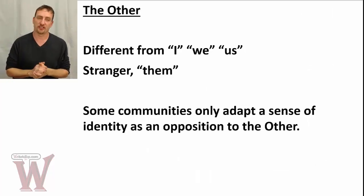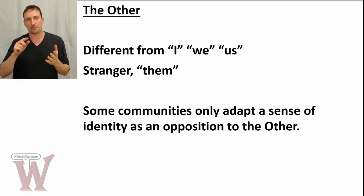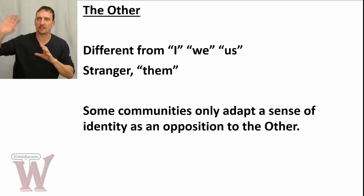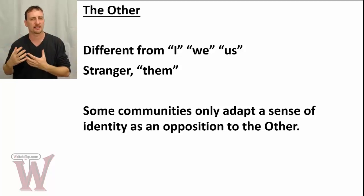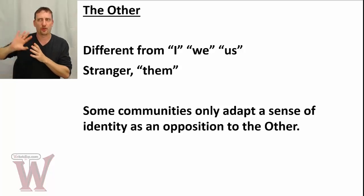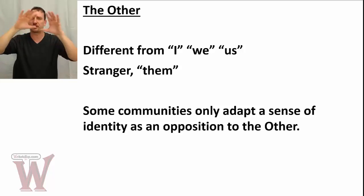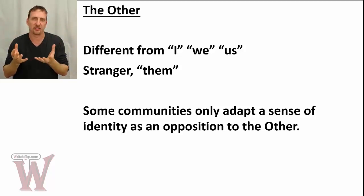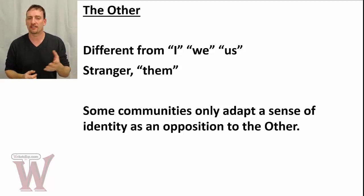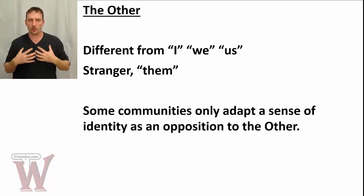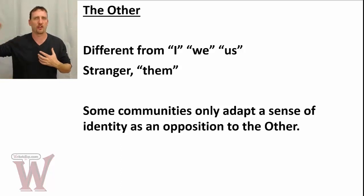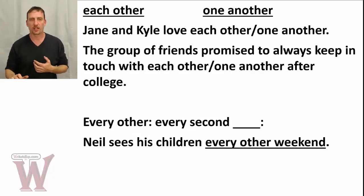Let's talk about some expressions. "The Other" with a capital O: when we talk about the Other, we mean someone separate and different from us — not I, not we, not us, but them. That's why we put a capital — it refers to a person or group that's separate from us. For example: "Some communities only adapt a sense of identity as an opposition to the Other" — we define who we are by who we are not.